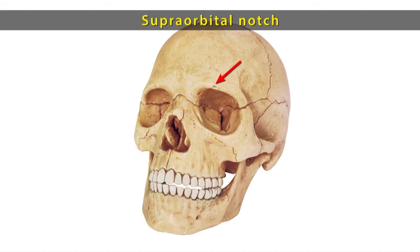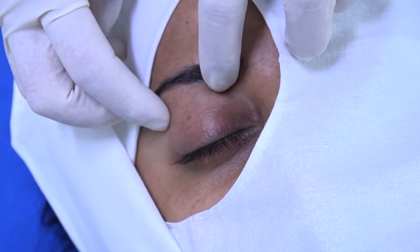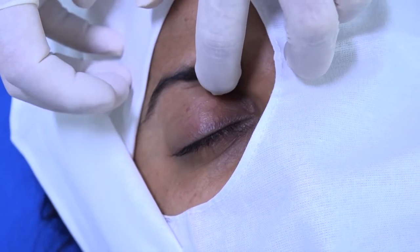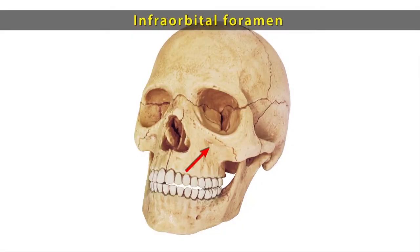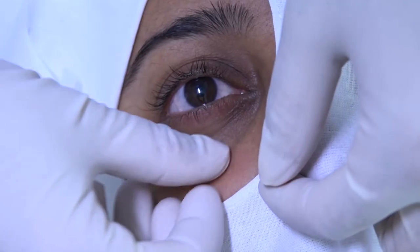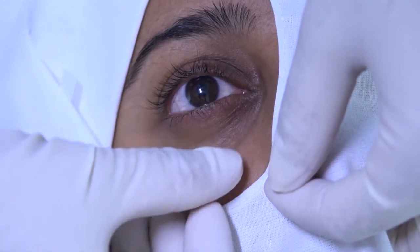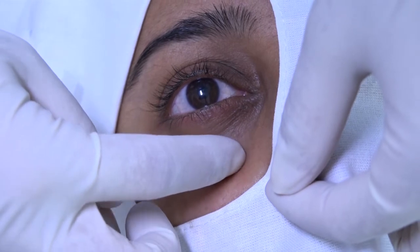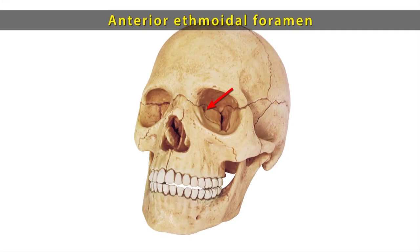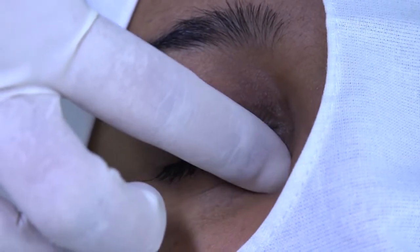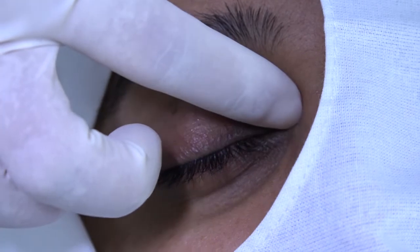Three anatomical landmarks are important while giving blocks in this area. The supraorbital notch is palpated at the junction of the medial one-third and lateral two-thirds of the superior orbital rim. The infraorbital foramen is located about 1 cm below the inferior orbital rim at the junction of the medial one-third and lateral two-thirds. The anterior ethmoidal foramen is located about 24 mm posterior to the anterior lacrimal crest.